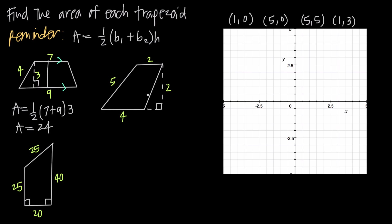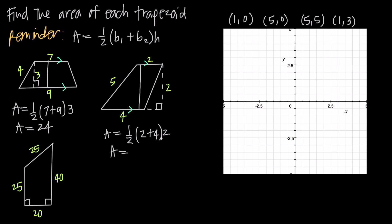In the second example we have another trapezoid. The two horizontal sides are parallel, and the two vertical sides are not parallel. So area equals one-half times the sum of the parallel side lengths: two and four, giving two plus four. Then we multiply by the height — not the slant height of five, which is irrelevant — but the distance between the two parallel sides, which is two. Simplifying: two plus four is six, six times two is twelve, and twelve divided by two gives an area of six square units.